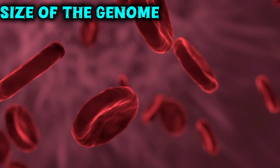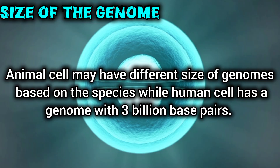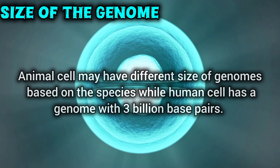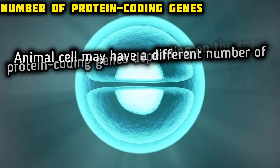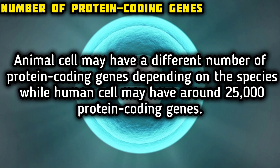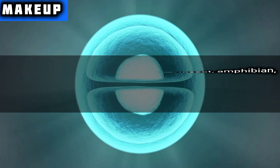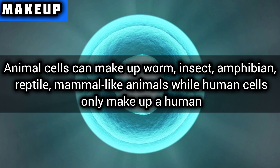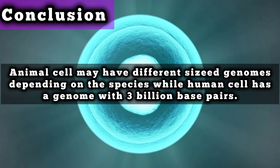Size of the genome: animal cells may have different genome sizes based on the species, while the human cell has a genome with 3 billion base pairs. Number of protein-coding genes: animal cells may have a different number of protein-coding genes depending on the species, while human cells have around 25,000 protein-coding genes. What they make up: animal cells can form worms, insects, amphibians, reptiles, and mammals, while human cells only make up a human.